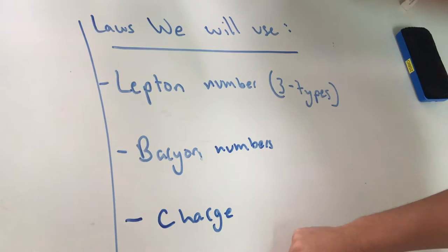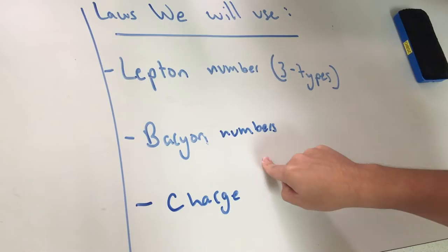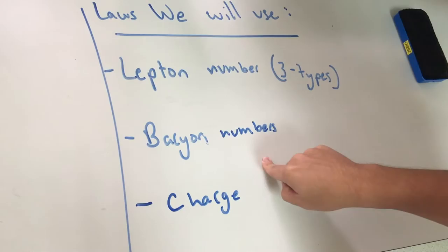Hey guys, we're gonna talk about conservation laws. As you know, you already know the main three: energy and mass, momentum, and charge. However, we also have to look at these new conservation laws: the conservation of lepton number, there are three types, baryon numbers, and charge.